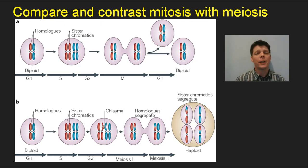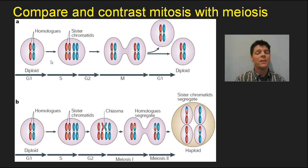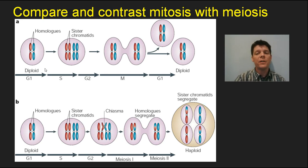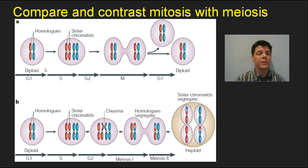I want to start by comparing and contrasting mitosis with the process of meiosis. The image at the top shows the process of mitosis — this is normal cell division, happening for example in your skin cells. Mitosis starts with diploid cells, which have two copies of each kind of chromosome: two copies of chromosome one, two of chromosome two, all the way through all 23 kinds, for a total of 46 chromosomes.